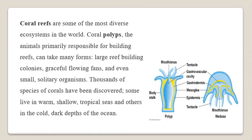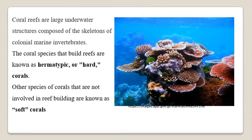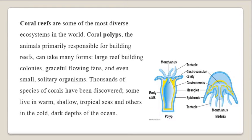Corals are formed from polyps, so they are called coral polyps - the polyps which are going to form the coral reef. Polyps are the animals primarily responsible for building the coral reefs. They are the individuals responsible for building the coral reefs. They can take many forms: larger reef-building colonies, graceful flowering plant-like forms, or small colonies. Solitary organisms are also found to exist, like sea anemones.